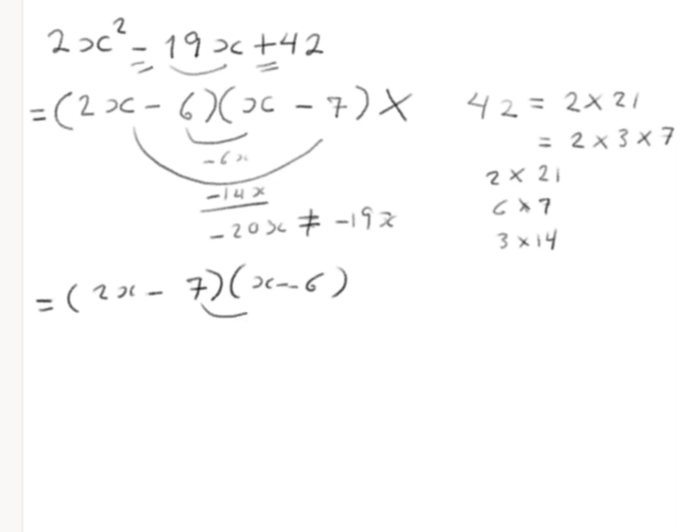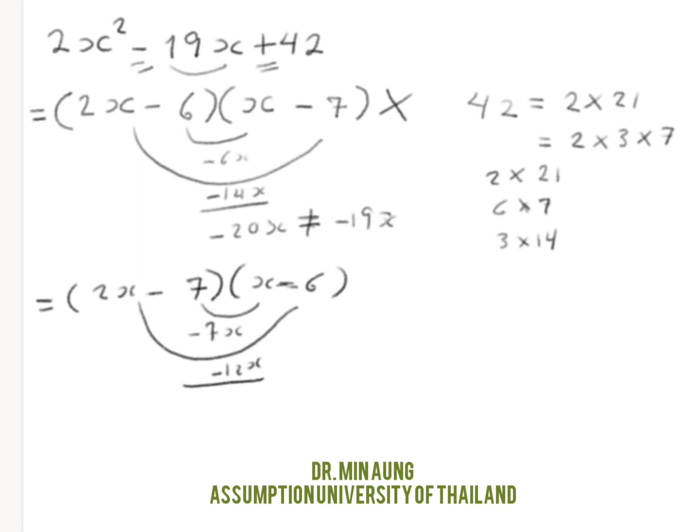You check. Negative 7x. If you multiply 2x and 6, then you get negative 12x. Negative 12x plus negative 7x is negative 19x. This is correct. This is the answer.